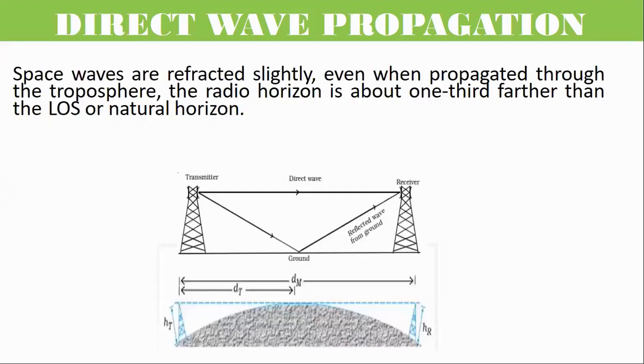Space waves are refracted slightly, even when propagated through the troposphere. The radio horizon is about one third farther than the line-of-sight or the natural horizon.